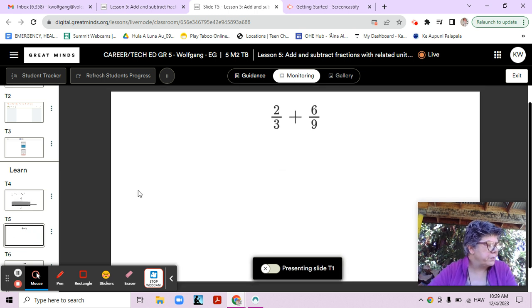Let's look at two-thirds plus six-ninths. Do you think the sum is going to be less than one, between one and two, or greater than two? Two-thirds is less than one, right? It's two out of three parts. And six-ninths is six out of nine parts.